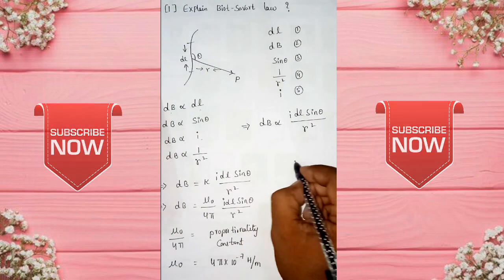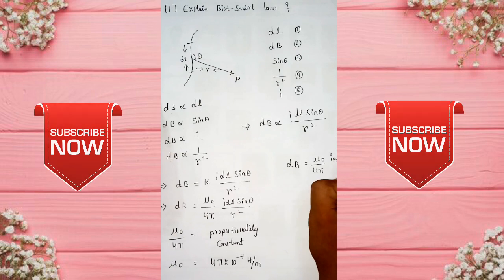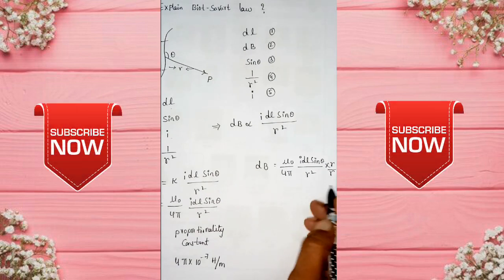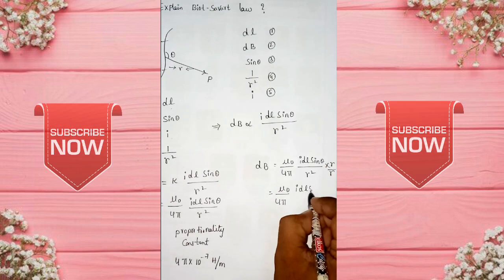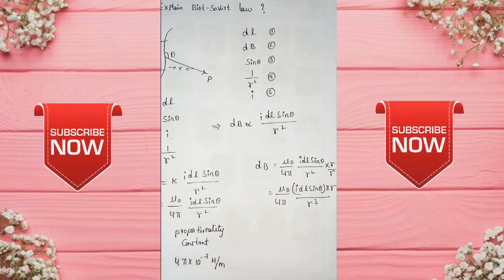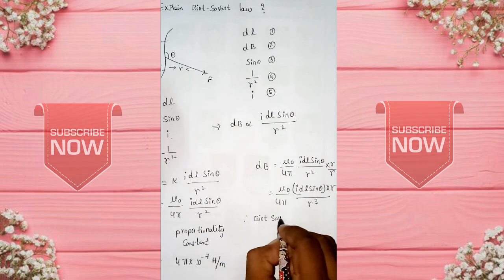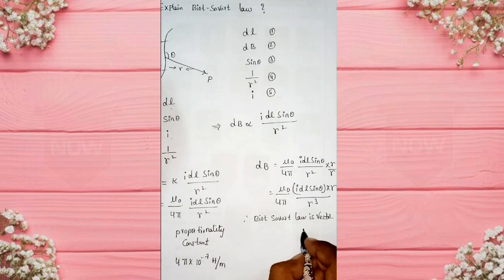Now, our derivation. Db equals to mu0 by 4 pi idl sin theta by r square into r by r. Adhe vedang, mu0 by 4 pi idl sin theta into r by r cube. Now, this is biot savart law in vector form. Therefore, biot savart law is vector form. This is the vector formula.